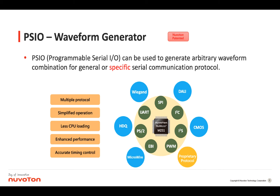Usually, it is common to use timer plus GPIO to achieve these specific communication protocols. But it is more complicated and requires frequent CPU intervention. When we use PSI-O, this not only simplifies the complexity of the operation, but also reduces the burden on the CPU. The saved CPU performance can be distributed to other places. Since all hardware operations do not require software intervention, the timing control is more precise.